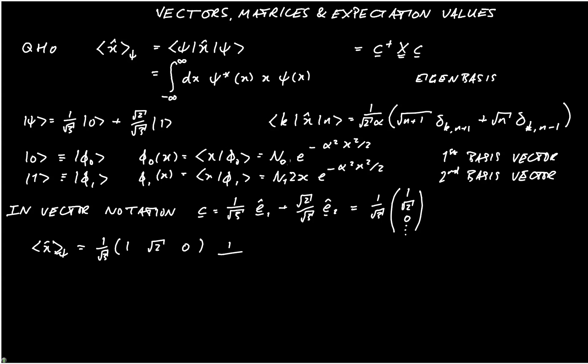Then we have the matrix, which is 1 over root 2 alpha into 0, 1, 0; 1, 0, root 2; and 0, root 2, 0. Remember that that matrix continues on. I realize I've just written a 0 where there should be actually a 2, so there's the root 2.